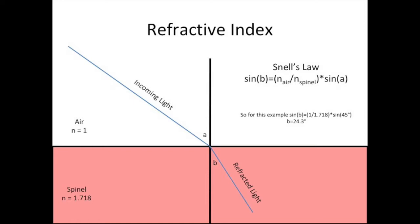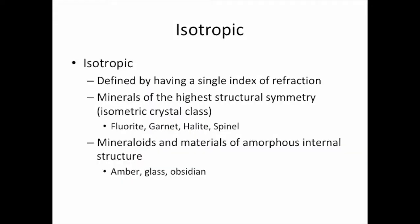Isotropic materials are defined by a single index of refraction, and being able to calculate that index of refraction is usually pretty helpful and very diagnostic in determining a mineral's identity. We can use our polariscope to determine that a mineral is isotropic; however, we can't really use it to determine the refractive index. For that, you need something like either a refractometer or a set of index oils. I don't actually have those things, so instead let's talk about the two subclasses of materials that comprise isotropic substances.